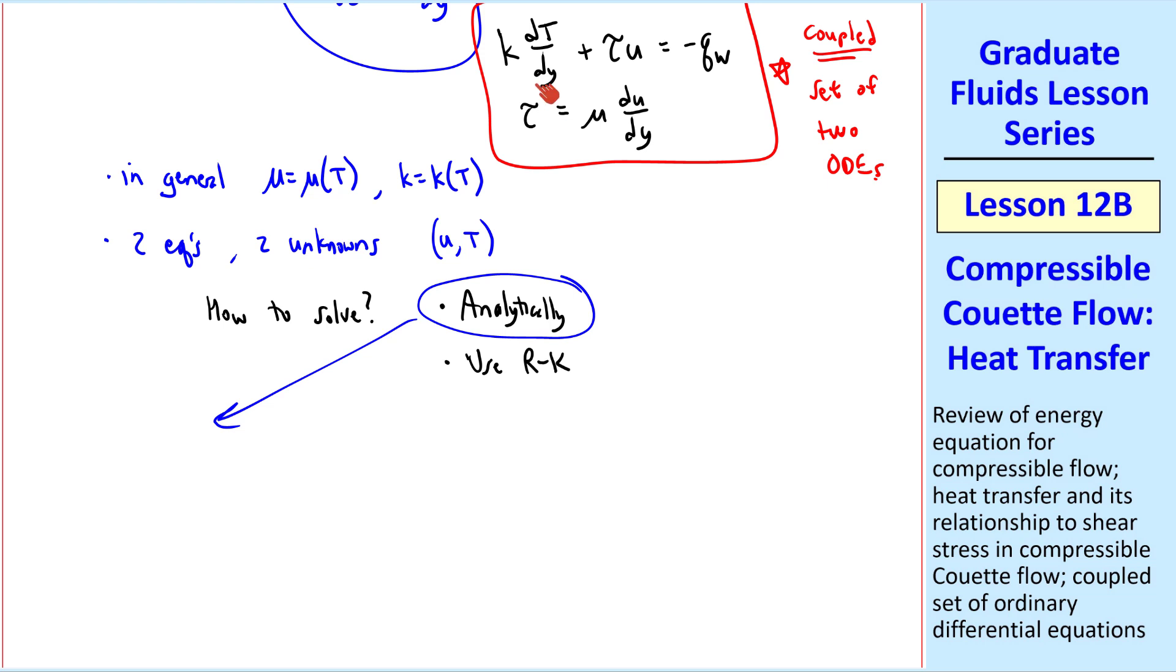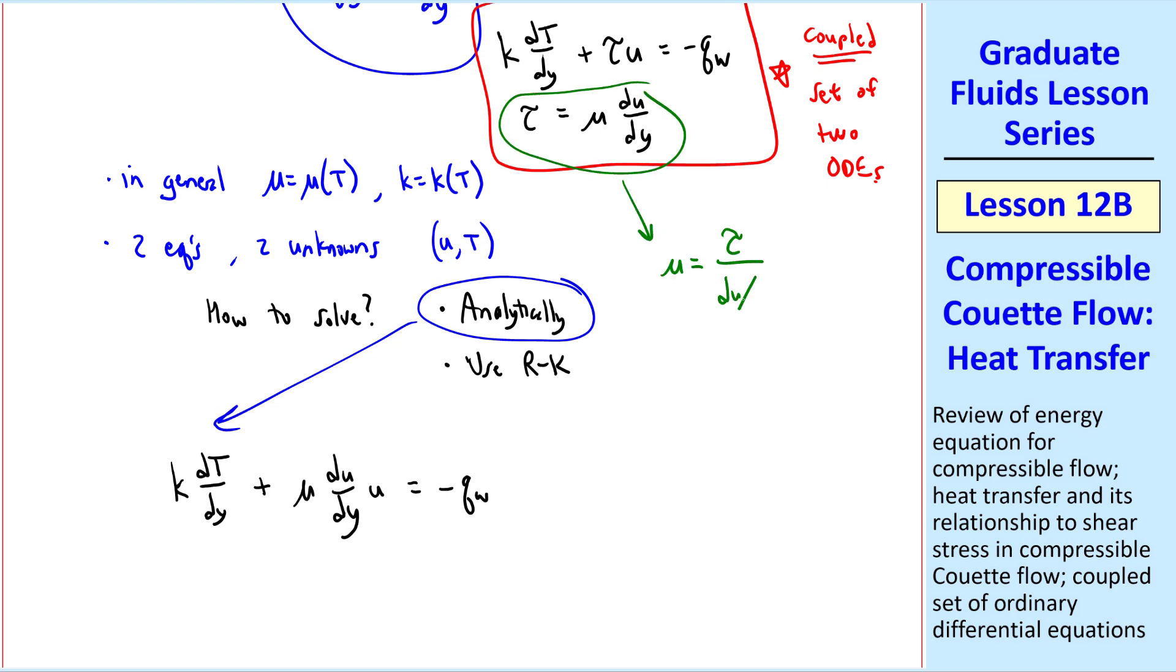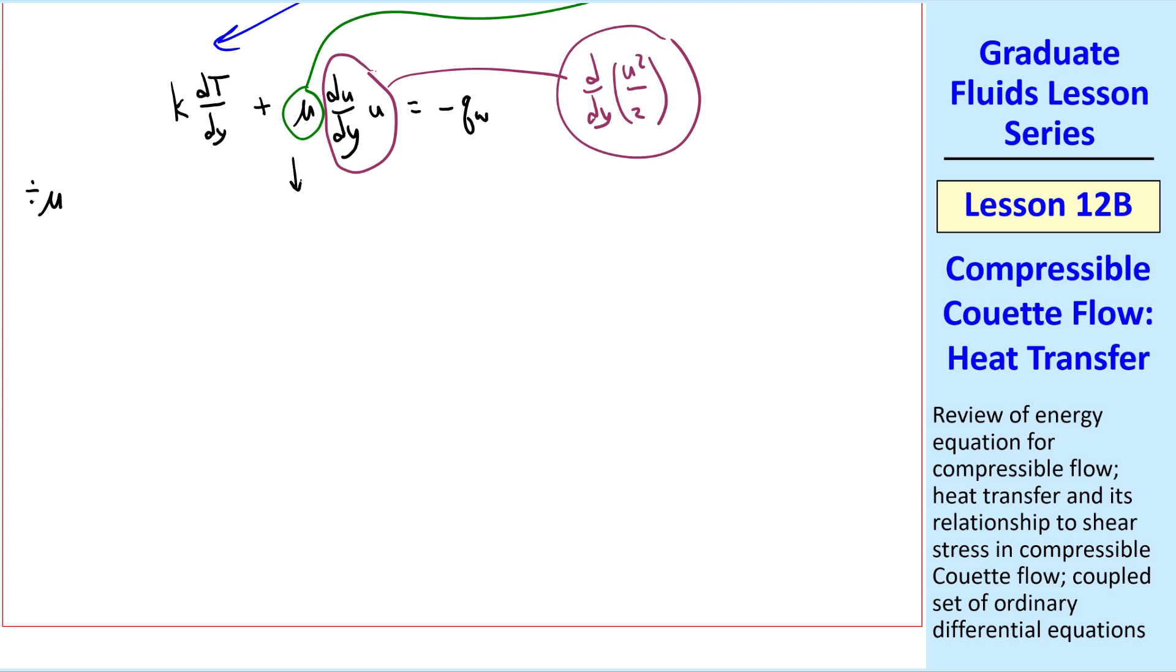Let's tackle the analytical solution. I'll rewrite this top equation using this lower equation. k dt dy plus mu du dy u equal negative qw. Now hold on to your hats, because we're going to do some fancy algebra here. Since tau is mu du dy, we can write mu as tau over du dy, and plug that in here for this mu. We can also write this term as d dy of u squared over 2. Let's also divide every term by mu. So this equation becomes k over mu dt dy plus d dy u squared over 2 equal negative qw over mu, but mu is tau divided by du dy, since tau equal mu du dy. That's how we got these terms instead of mu.